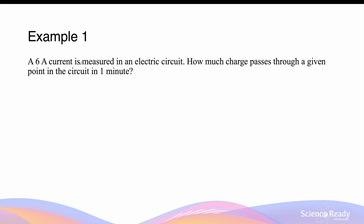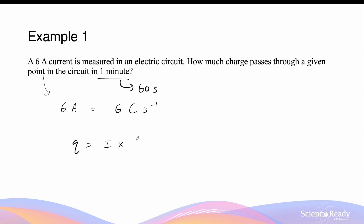A six amp current is measured in an electric circuit. How much charge passes through a given point in the circuit in one minute? We know six amps is equivalent to six coulombs of charge per second. In one minute, this is 60 seconds. So to find the total charge, we simply multiply the current by the time: six coulombs per second multiplied by 60 seconds gives us a total charge of 360 coulombs.